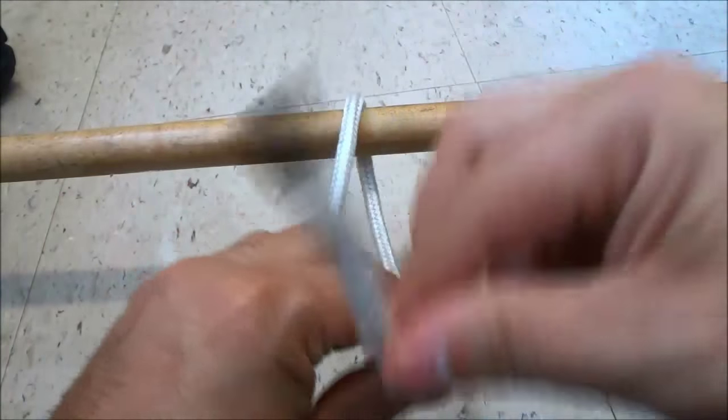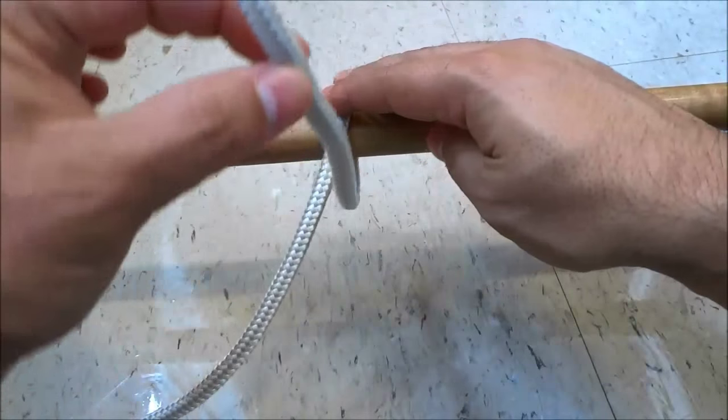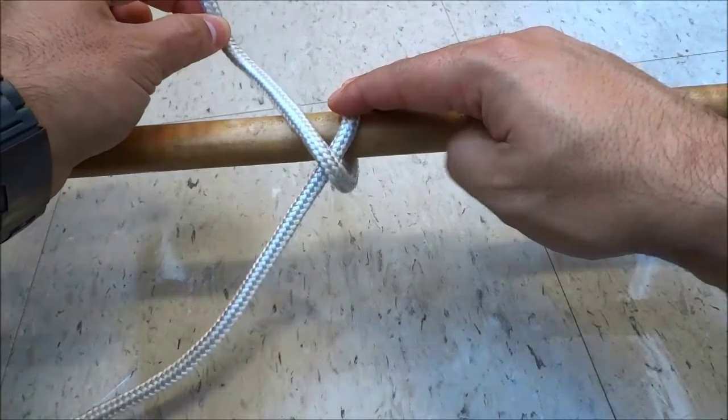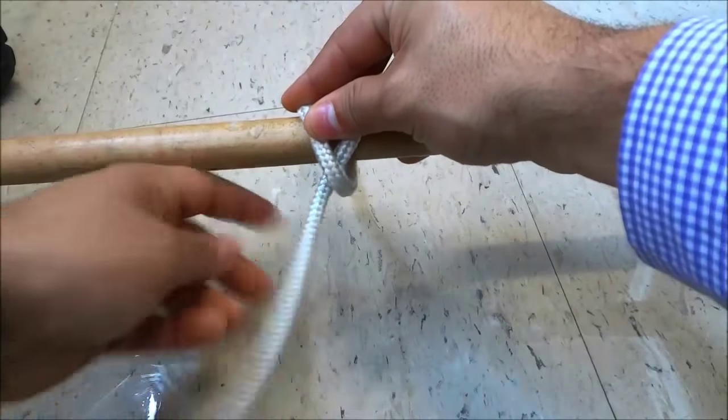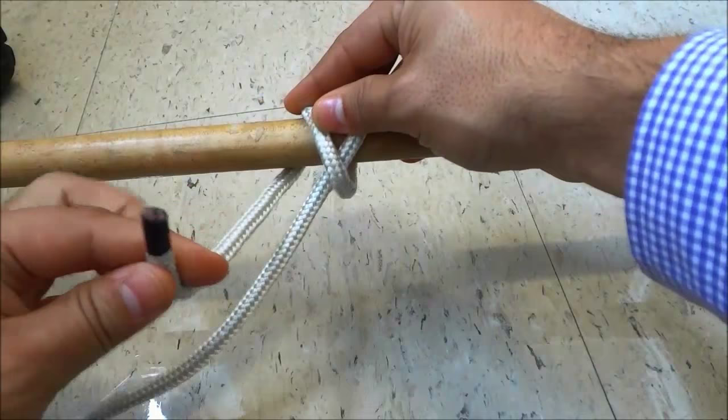Then I'm going to get the end of the rope and bring it over the rope towards the left just like that. Then I'm going to wrap it around the piece of wood just like that.